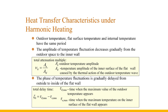However, the periodic thermal effects of the actual building envelope do not change according to the cosine function rule with time. When the calculation accuracy is not high, it can be considered approximately as a harmonic heating effect, taking the difference between the highest value of the actual temperature and the average value as amplitude, and determining the inner surface phase according to the time when the highest temperature value occurs.